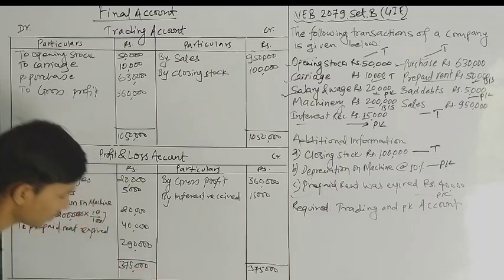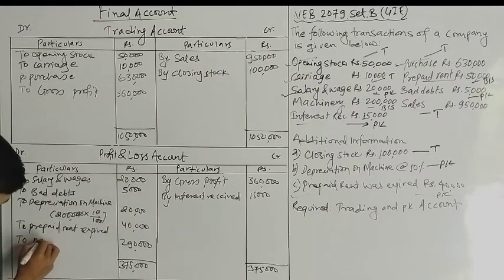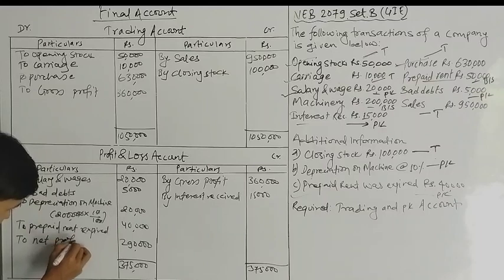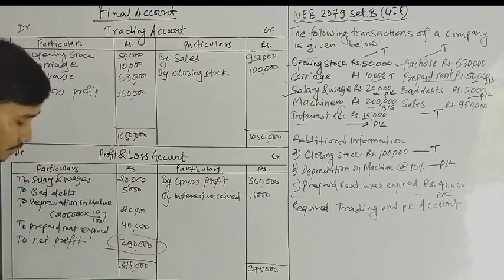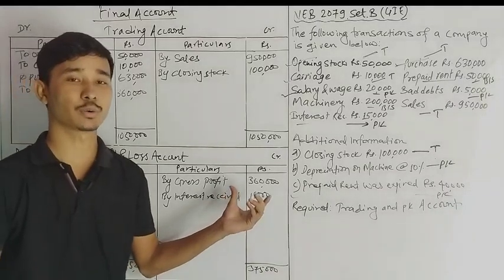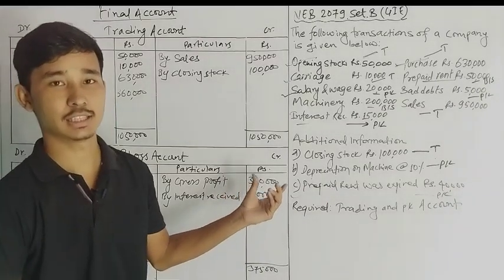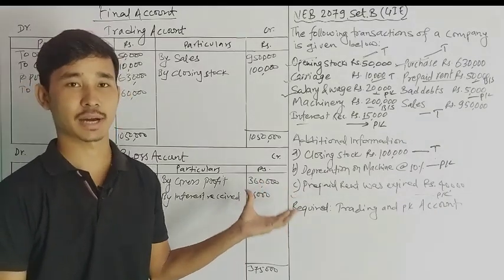$3,78,000. We have net profit. This is the final account exam — easily solved. Type max.